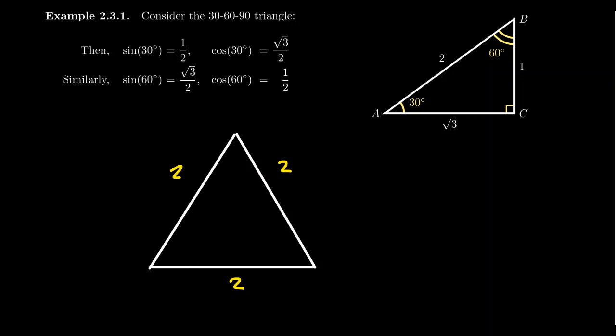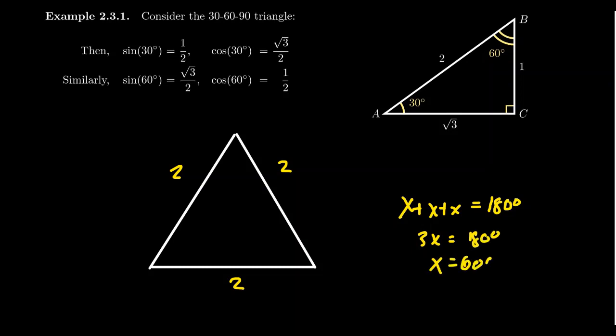If you have three angles of the same size, x plus x plus x equals 180 degrees, so 3x equals 180 degrees, meaning x equals 60 degrees. So for an equilateral triangle, every angle measurement is necessarily 60 degrees. You can start to see how 60 degrees plays into this.